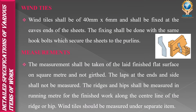Wind ties shall be of 40 mm × 60 mm and shall be fixed at the eaves ends of the sheets. Wind ties are designed to provide ties for trusses that are likely to be subjected to high winds, to prevent damage from high winds — they are used for safety in the roof. The measurement shall be taken of the light finished flat surface in square meters. The laps at the end and side shall not be measured.